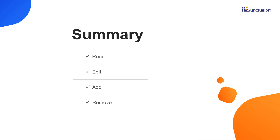Finally, let me summarize the main points. I explained the steps to perform read, edit, add and remove operations on the Syncfusion Blazor TreeView. You can download this working example from the GitHub link in the video description below. You can also check if you are eligible for our community license, which gives you a free license key to use our Blazor products. If you found this video useful, click the like button and subscribe to our channel to get notifications about new videos. Thanks for watching.